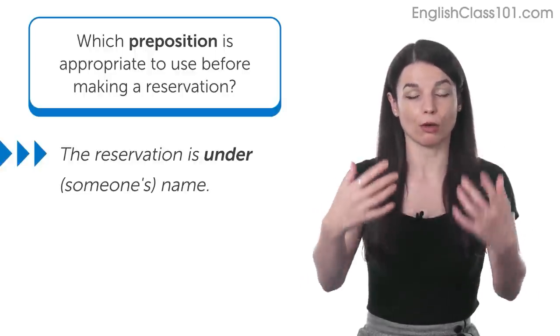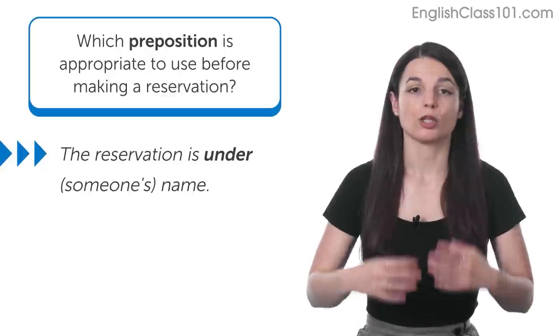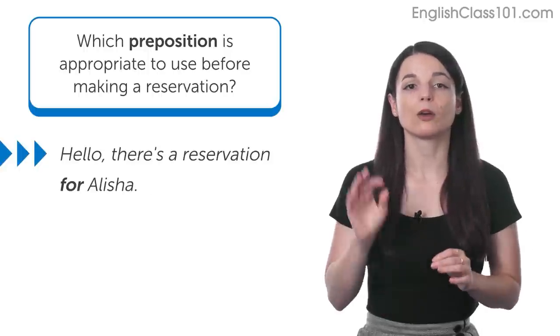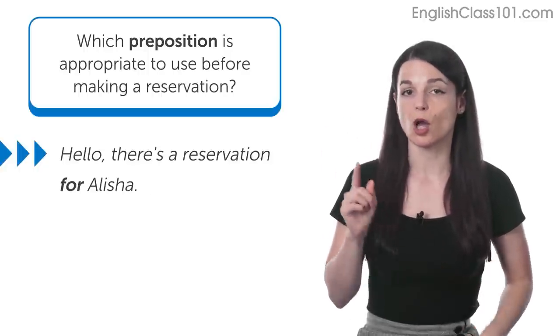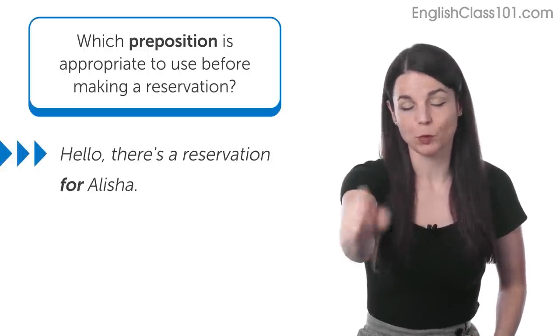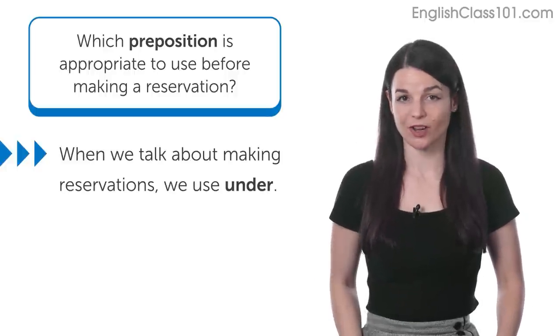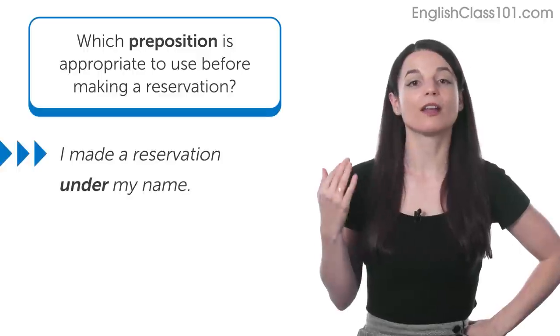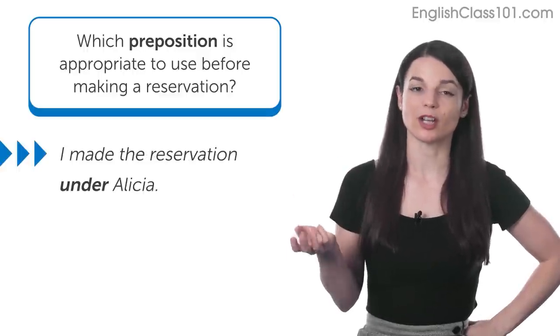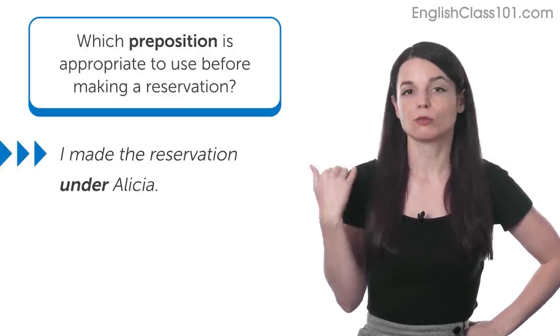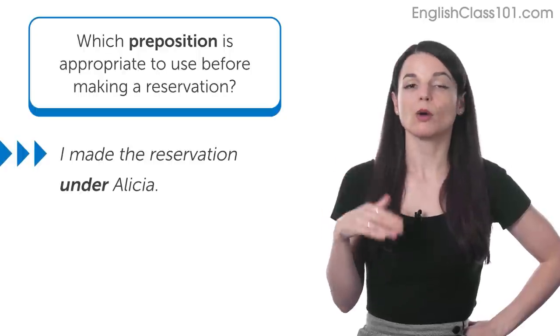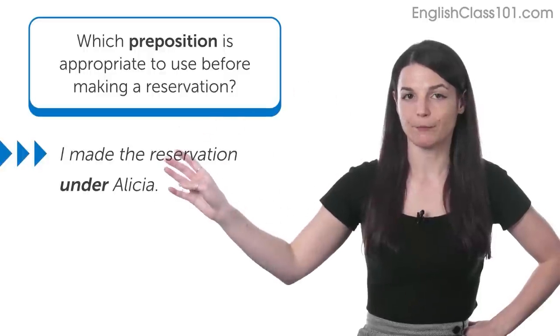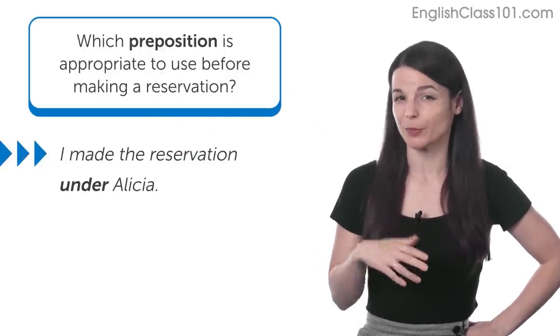So, when you arrive at the hotel, you arrive at the restaurant, you usually say, hello, there's a reservation under Alicia or you might also say, hello, there's a reservation for Alicia when we arrive there. When we talk about making the reservation, however, we use under. So, I would say, I made a reservation under my name or I made the reservation under Alicia. We don't use with, we don't use by, we don't use for. I'll come back to for in a second because we use for in a different way. But let's talk about the other options that you presented.